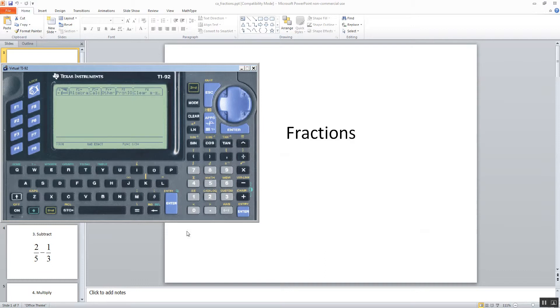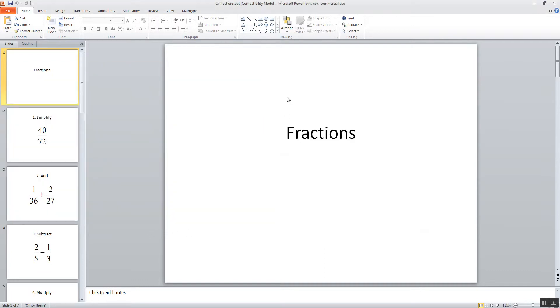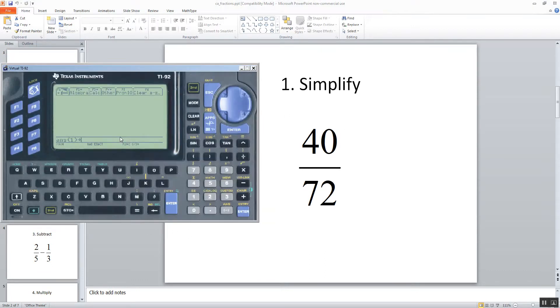Then let me work the first problem. I'll show it to you. We want to simplify this fraction. So we do 40 divided by 72 and then press enter. And you see it simplifies to 5 9ths. So that's how you can automatically get it in fraction form.